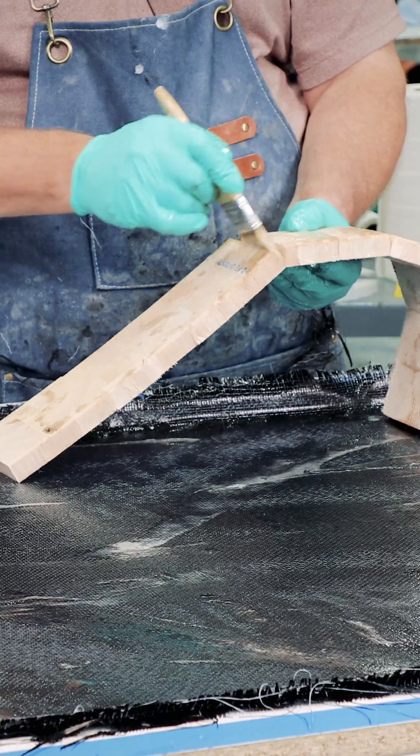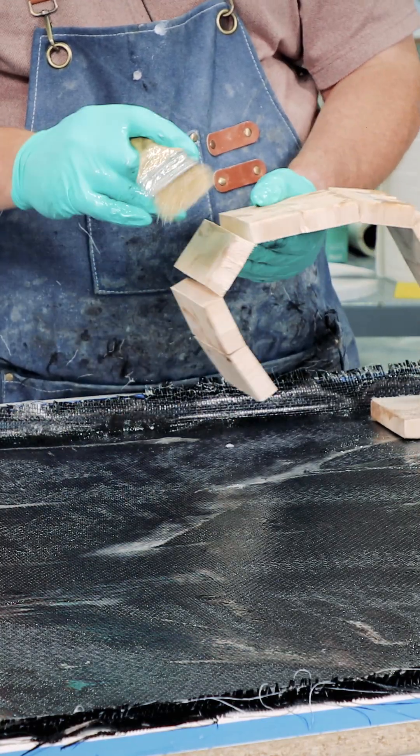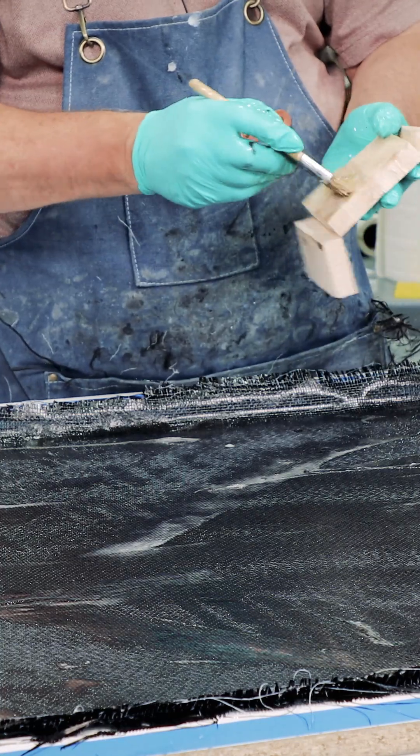The other thing we're going to do is between each square balsa, actually wet it out with epoxy. So we'll bend it, open it up, do a quick brush on each one.